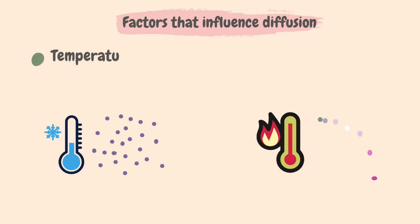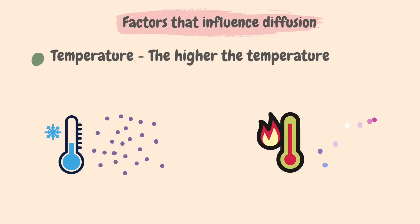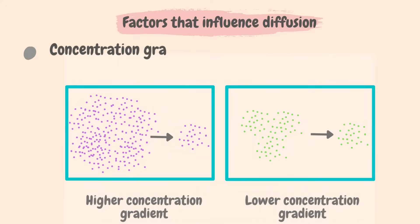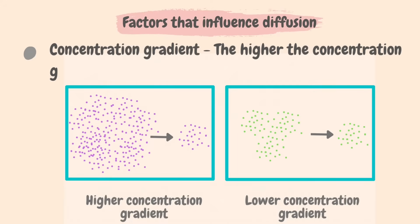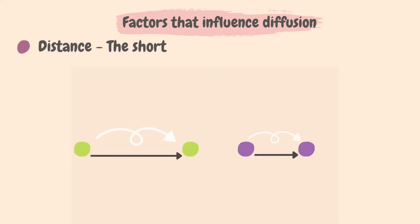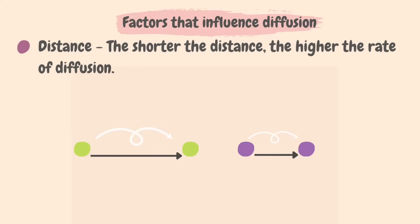The next factor is temperature. The higher the temperature, the higher the rate of diffusion, because molecules are faster and have more kinetic energy. Concentration gradient is another factor. The higher the concentration gradient — that is, the greater difference in concentrations — the higher the rate of diffusion. For example, the difference in concentration in the box on the left with the purple molecules is much higher than that of the box on the right with the green molecules, so diffusion will take place much faster on the left. Distance is another factor: the shorter the distance the particles have to move, the higher the rate of diffusion and the quicker the process.